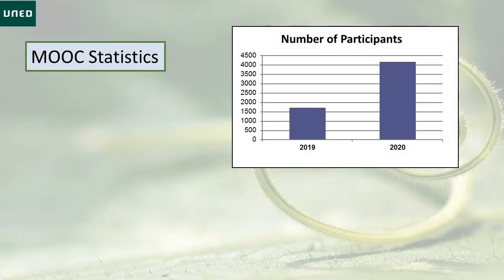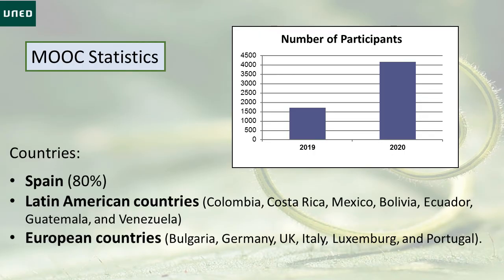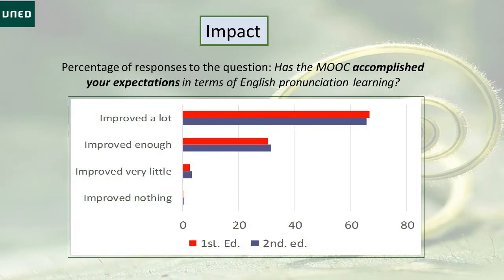The MOOC had over 1,700 students on the first edition and over 4,000 on the second. The participants were mainly from Spain, but there were students from other countries in Latin America and Europe. The results of the questionnaires presented to students at the end of the MOOC showed very positive results. For example, the responses to the question 'Has the MOOC accomplished your expectations in terms of English pronunciation?' showed that almost 70% of students said they improved a lot, 30% enough, and only a few students said very little.